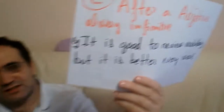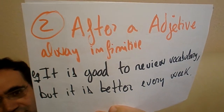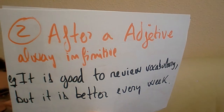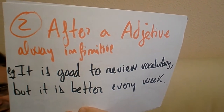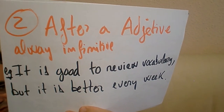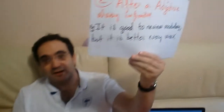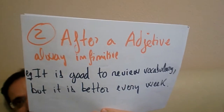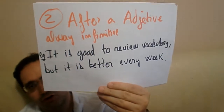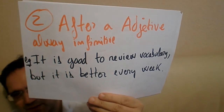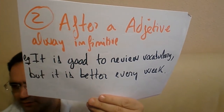That's the first rule about infinitives. The second rule is a little more difficult. After an adjective, if you need to put a verb, it should be in infinitive. For example: 'It is good to review vocabulary' — 'good' is an adjective, so after the adjective you put the infinitive. 'It is better to review every week' — 'better' is a comparative adjective, but it's still an adjective, so you still use the infinitive.